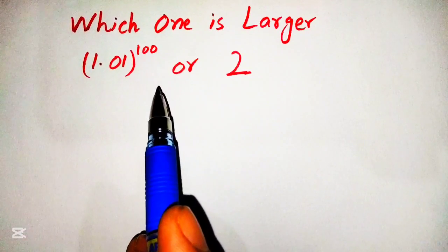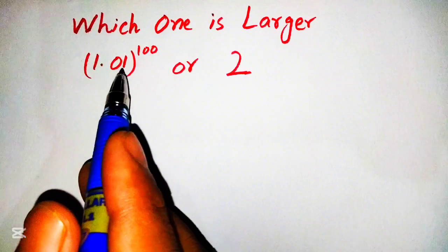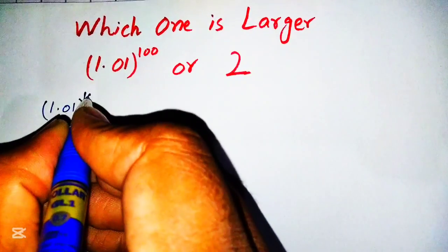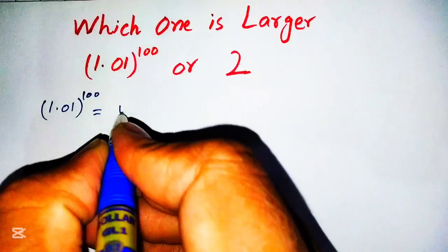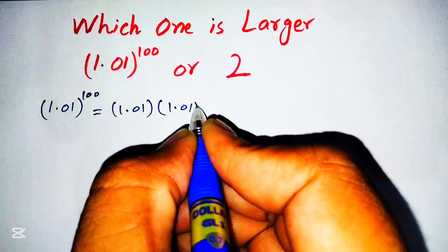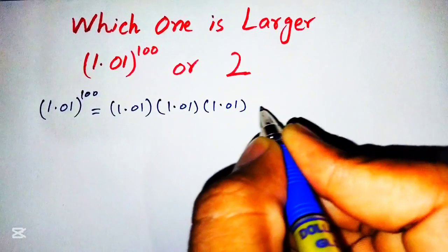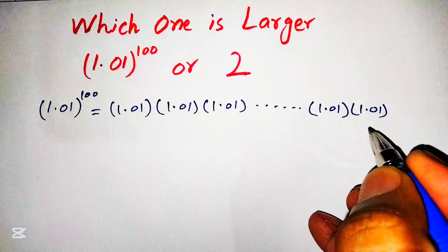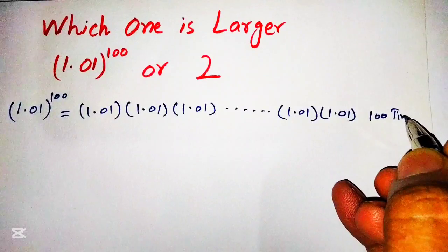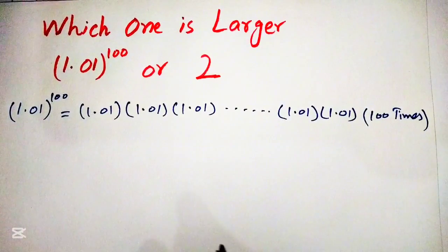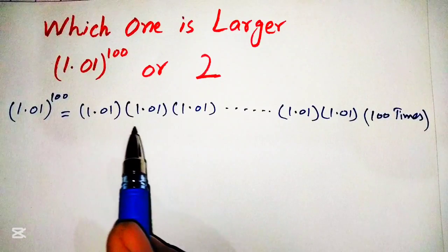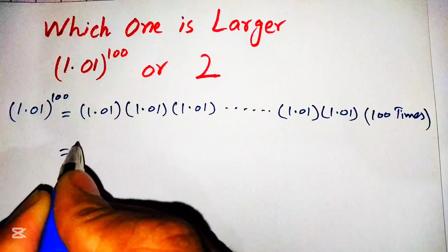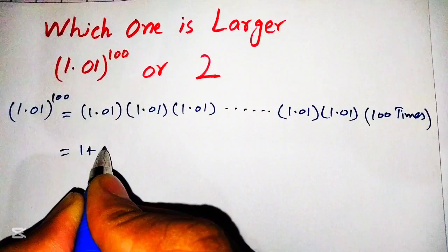To solve this, let's start with 1.01 raised to the power 100. We can write it as 1.01 × 1.01 × 1.01, and so on, multiplied 100 times. We can also rewrite 1.01 as 1 plus 0.01.